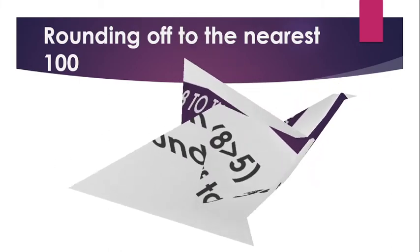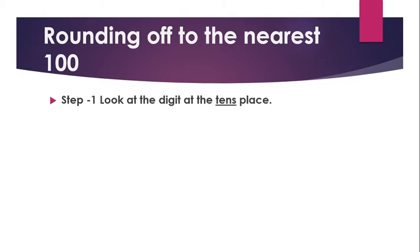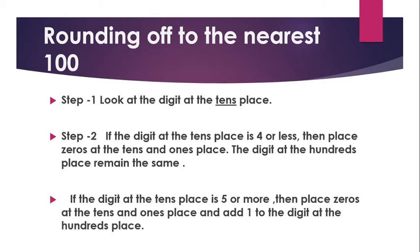Now, rules for rounding off to the nearest hundred. Step 1: look at the digit at the tens place. Step 2: if the digit at the tens place is 4 or less, then place zeros at the tens and ones place, and the digit at the hundreds place remains the same. And if the digit at the tens place is 5 or more, then place zeros at the tens and ones place and add 1 to the digit at the hundreds place.